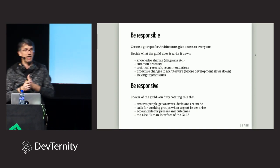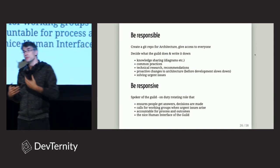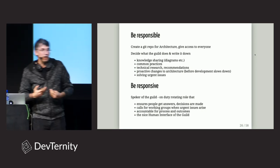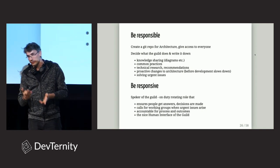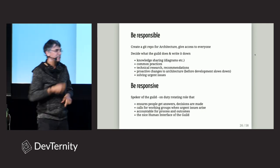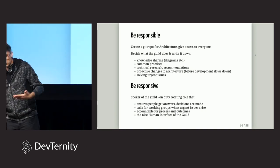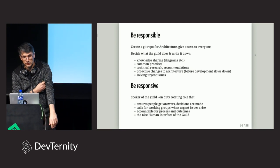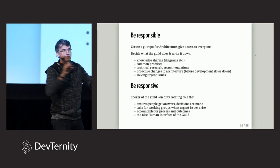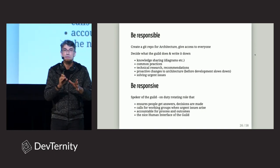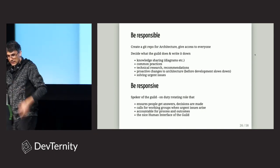The next step was making the guild visible. We created an email and a Microsoft Teams channel for communication. Then we decided to have a single person on duty — a speaker of the guild — responsible for answering all questions. This role would rotate weekly. That person would make sure that even when people work in different teams, things get done: meetings happen, research is completed on time. It's called the speaker because it's like the Speaker of the House of Commons — saying 'order, order' all the time.